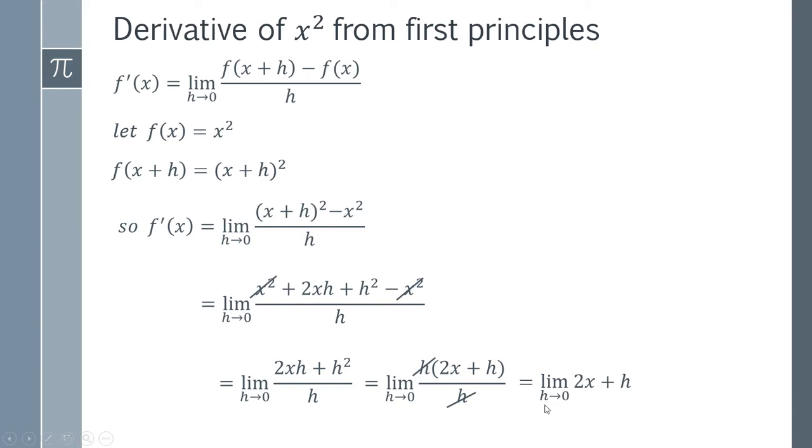leaving us with the limit as h goes to zero of 2x plus h, and of course this h is simply going to disappear when we take the limit, and we're going to be left with 2x, which is our final answer.